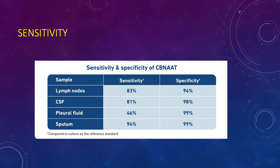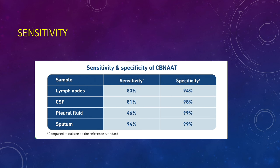How sensitive and specific is this test? For sputum, it is highly sensitive and highly specific — ruling out true negatives with 99% specificity. For other extrapulmonary samples, it has fairly good sensitivity and specificity for lymph nodes. For CSF, also very good specificity. For pleural fluid, however, the sensitivity is only 46%, meaning the ability to find a truly positive pleural fluid sample for TB is only 46%. But the specificity to rule out a negative sample is 99%. So if GeneXpert is negative, you may not have isolated MTB DNA in the pleural fluid, and you must take that clinically forward.